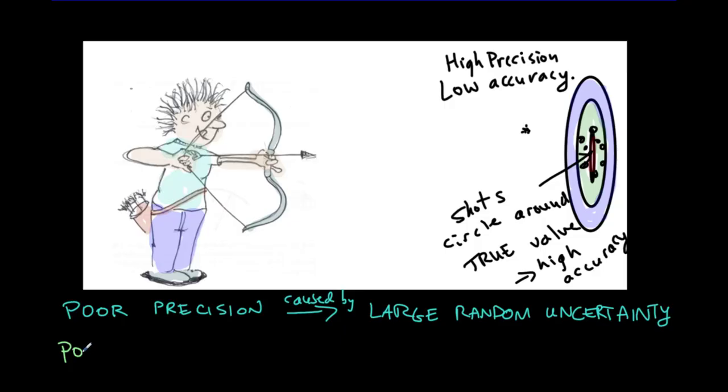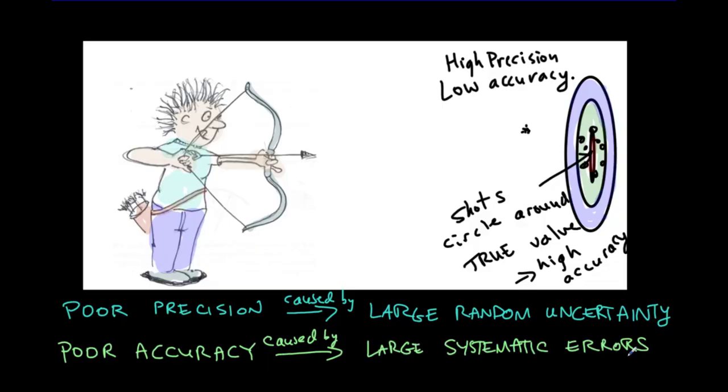Whenever you have poor accuracy, that will be caused by large systematic errors. So for the archer here, some sort of optical illusion was leading to all of his arrows going off to the left. If you're dropping the ball, maybe your stopwatch is not properly calibrated. So all of your time measurements are off by perhaps two hundredths of a second or something like that. So a systematic error shifts all the values in one direction.